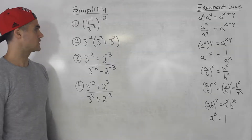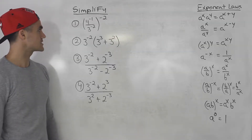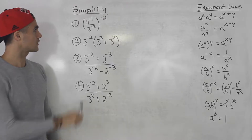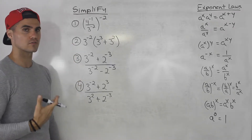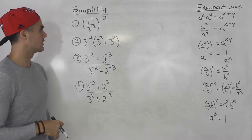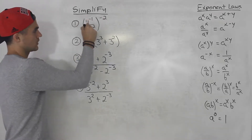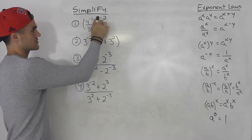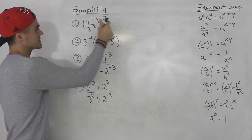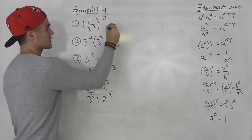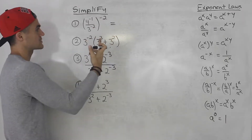What's up everyone, welcome back. Moving on to more exponential expressions to simplify. Starting with number one, we've got four to the negative one over three to the negative two, to the power of negative two. Whenever I have a bunch of stuff going on in a bracket and there's an exponent outside of the bracket, I always like to simplify the bracket first if possible before dealing with that exponent on the outside.